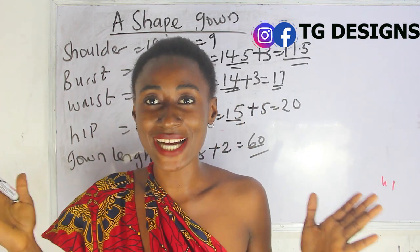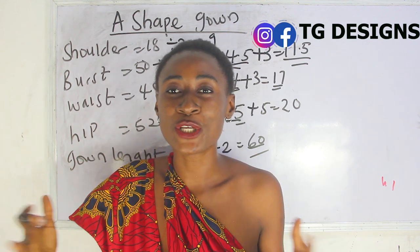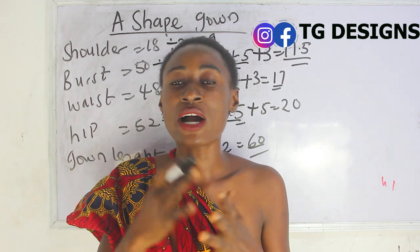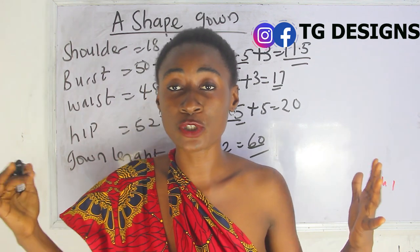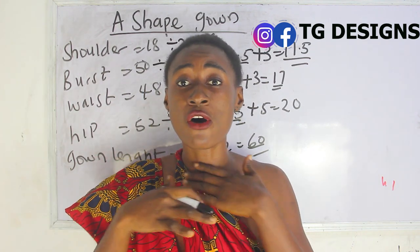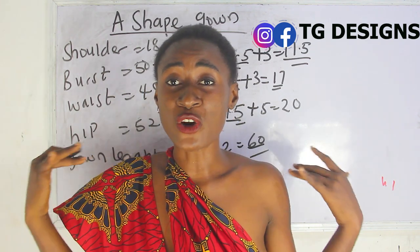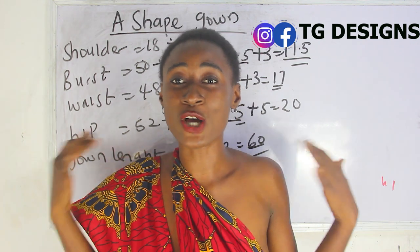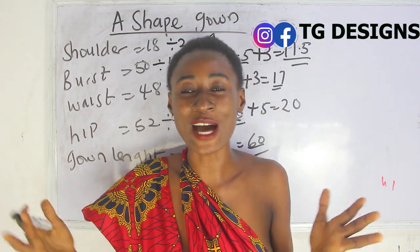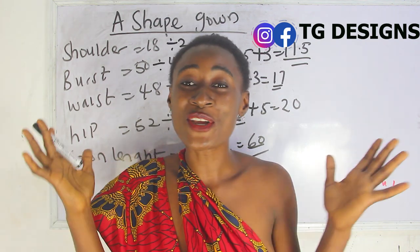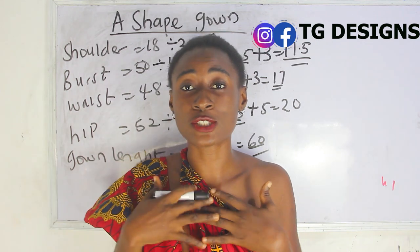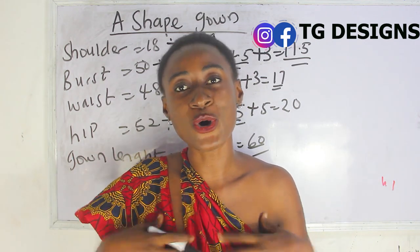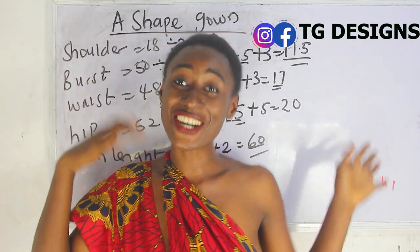These are the basic measurements required to achieve your A-shape maxi dress. You can rock this with any sleeve of your choice — your regular sleeve, your fleece sleeve, or make it armless. It all depends on how you want to style this dress. Let me know if you have any questions in the comment section.